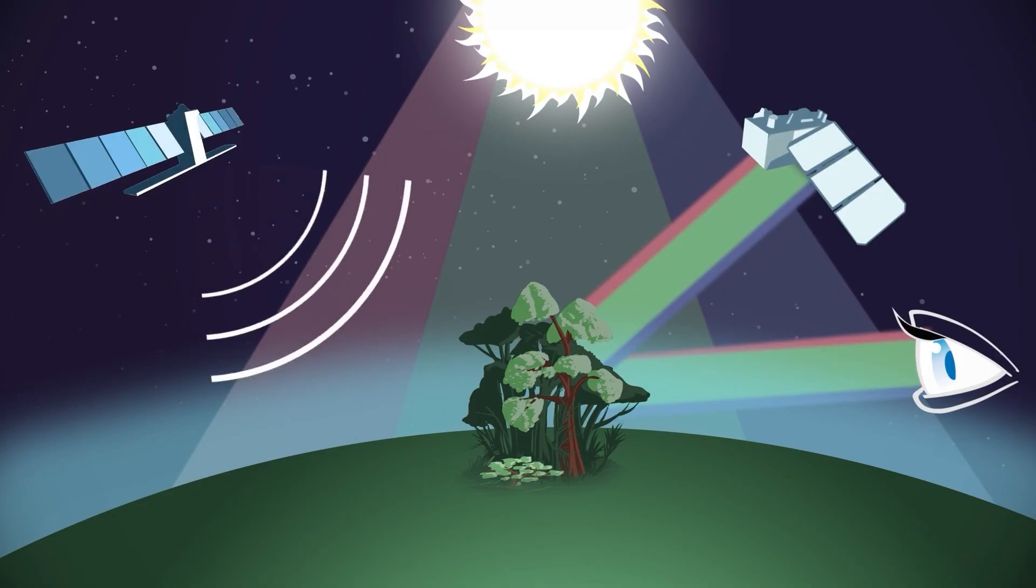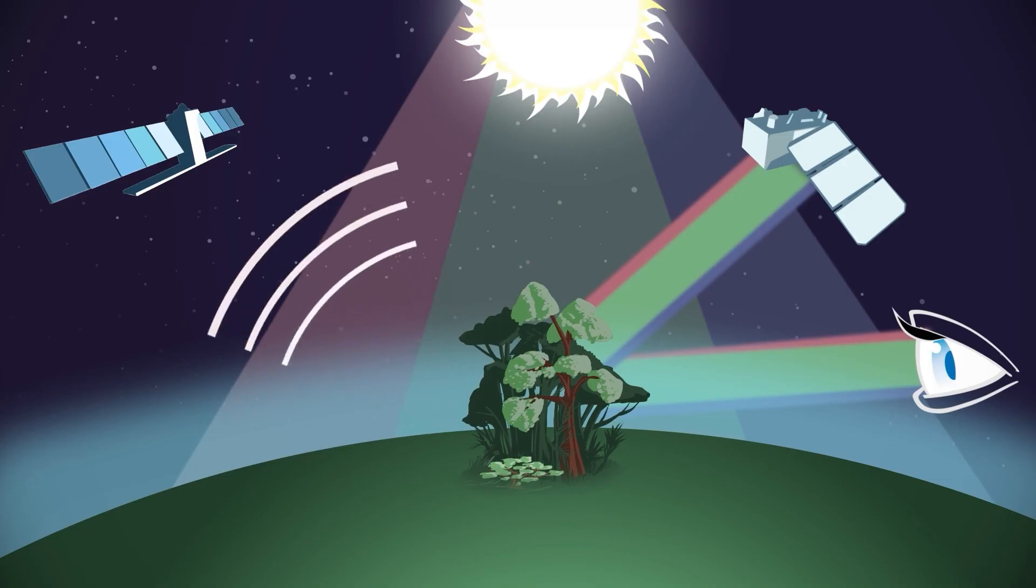Radar sensors, on the other hand, emit their own long wave microwave pulses and receive the microwaves reflected by objects.